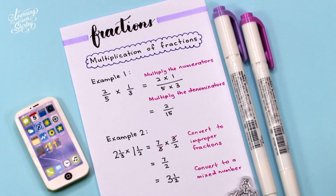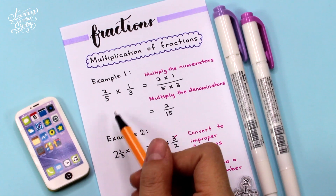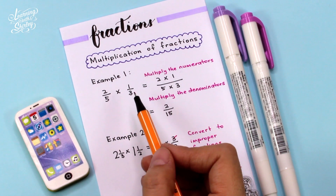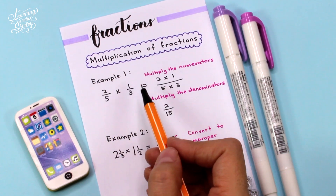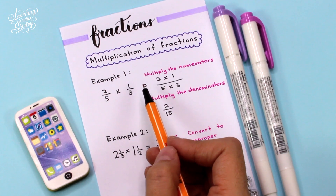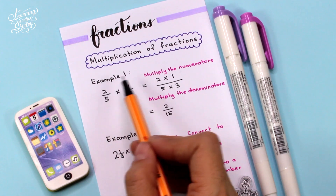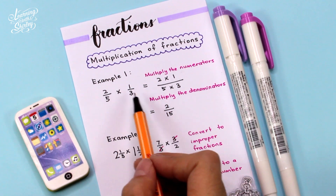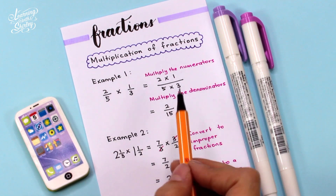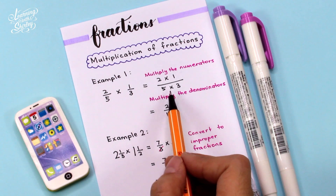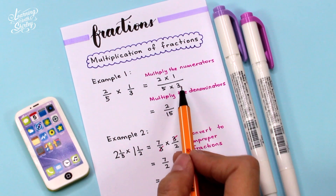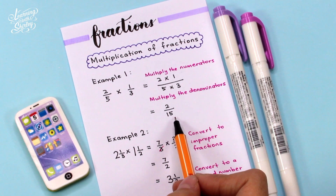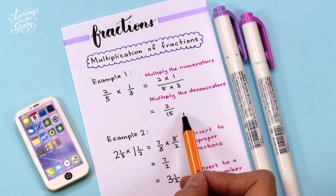How to multiply fractions? Example 1: 2 over 5 times 1 over 3. First, we multiply the two numerators: 2 times 1. Then we multiply the two denominators: 5 times 3. So the answer is 2 over 15.